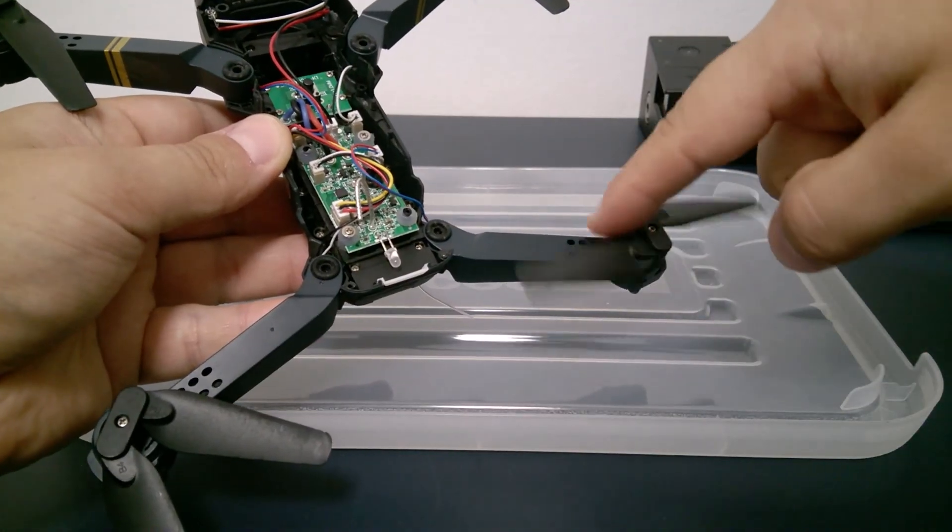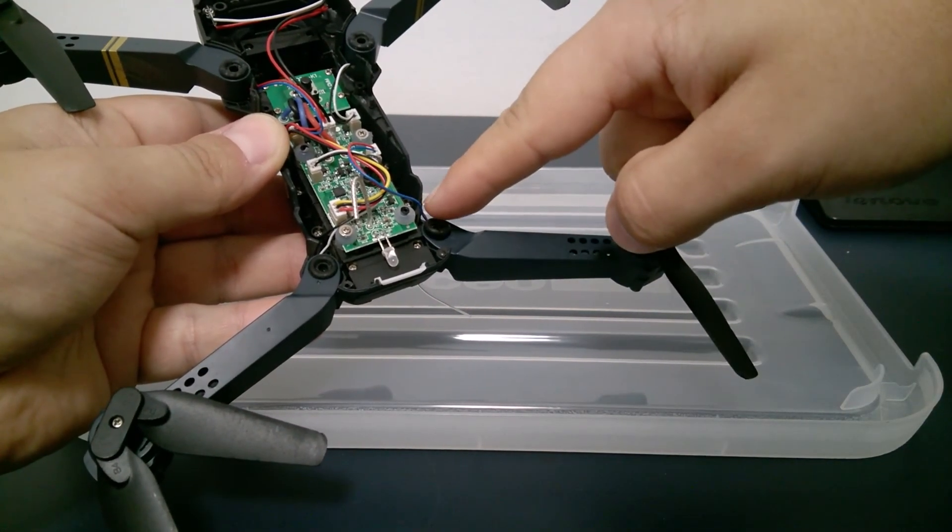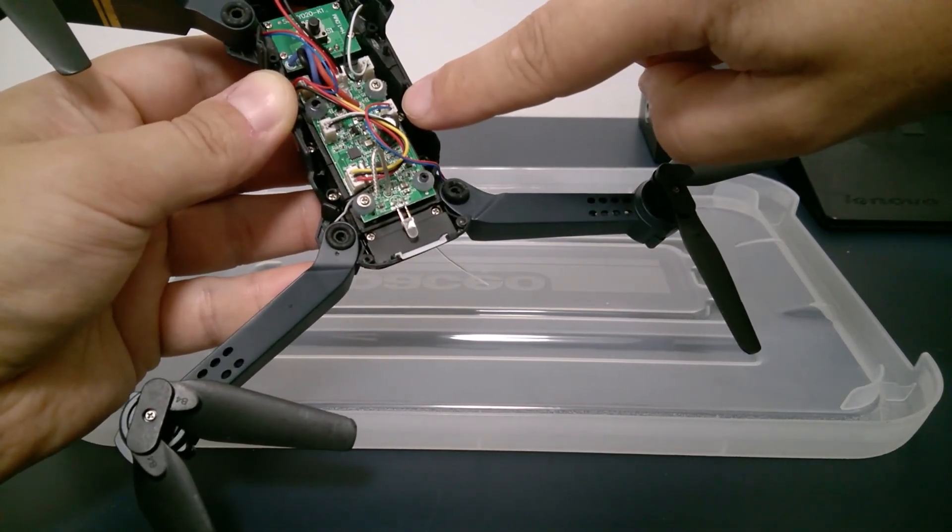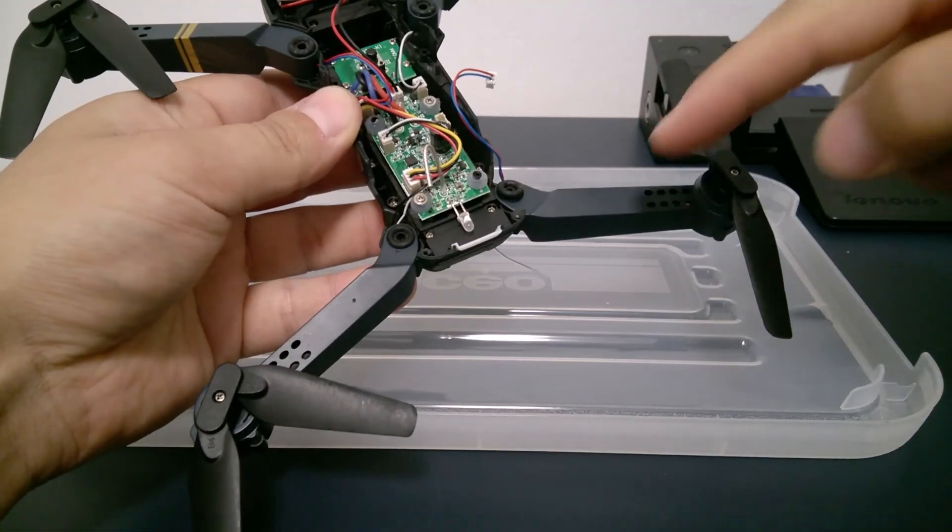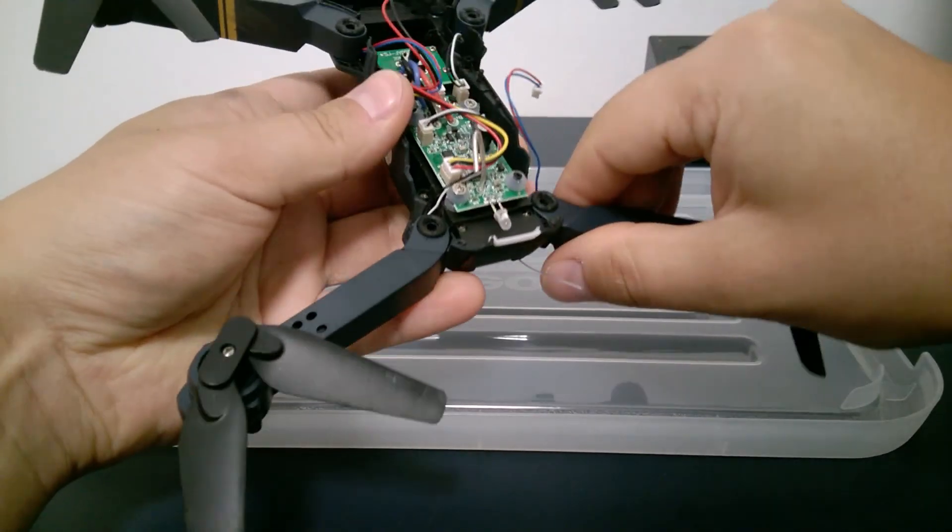In our case we need to fix this arm. So we will check where its wire goes to and disconnect the wire from the main control unit. Next remove the arm which is done easily, you just pull it up.